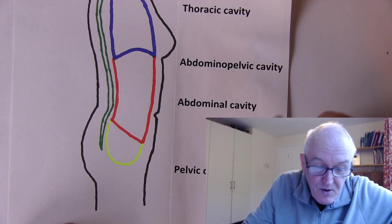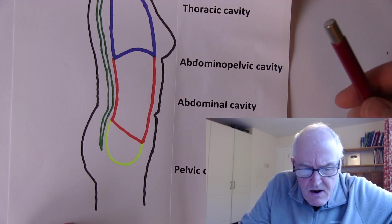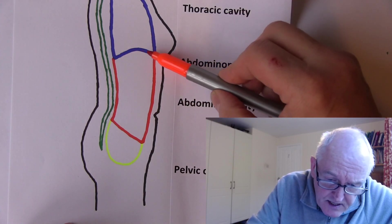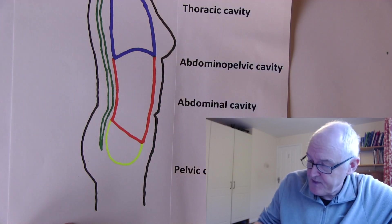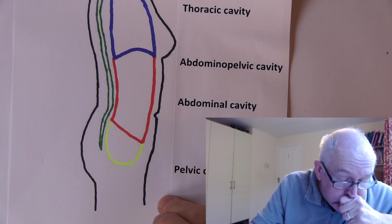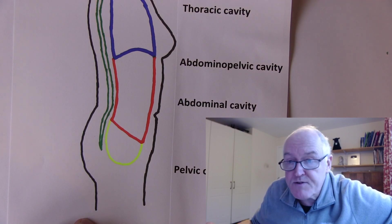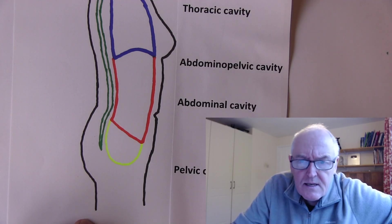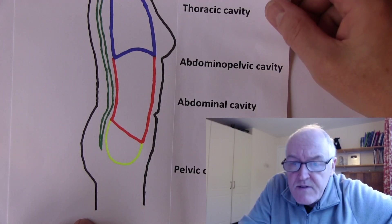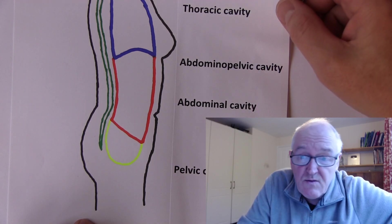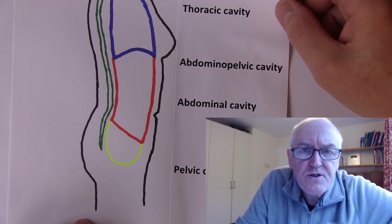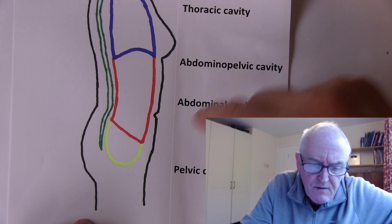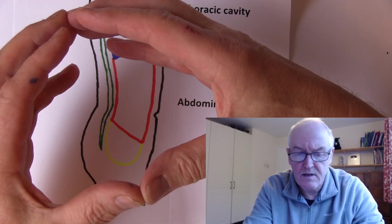A very full bladder can also rise up into the abdominal cavity. Medically it is useful to think of the abdominal cavity as separate — it is the upper part, whose superior surface is the inferior surface of the diaphragm, drawn in orange. The pelvic cavity, in yellow, is the region below. The abdominal cavity contains the stomach, liver, spleen, gallbladder, small intestine, and most of the colon.